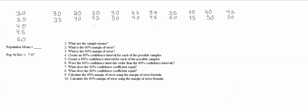Let's work through some of these questions that I told you would be on the exam. One thing we have to do before we answer any of these questions is we have to find out what this population mean equals. This is just to fill in the blank that I gave you, and it has to be done before we get to any of these questions. To find the population mean, we just add the five numbers and divide the total by five.